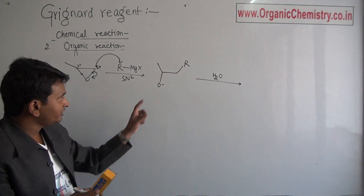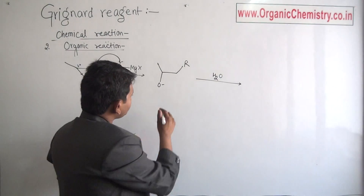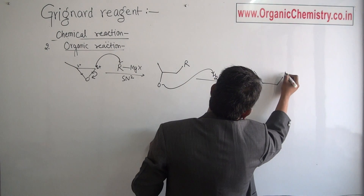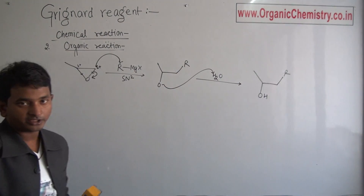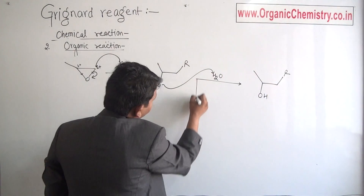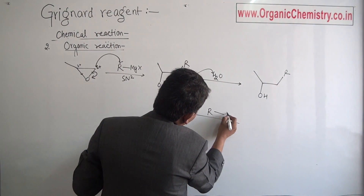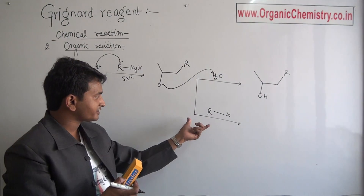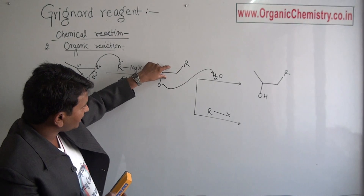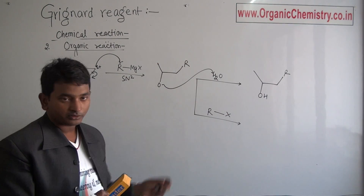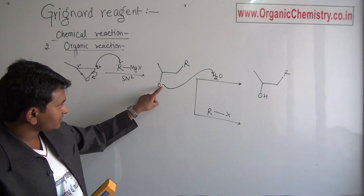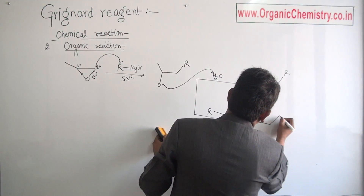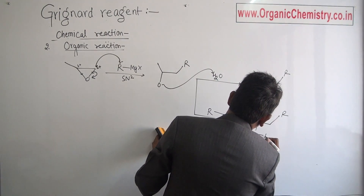If we add water — acidic hydrogen or OH — alcohol is obtained. But if we use alkyl halide, that is if alkyl halide is present in another reaction container and we add this reaction into that container, this nucleophile will easily attack over this carbon and replace the halogen to give the final ether as a product.